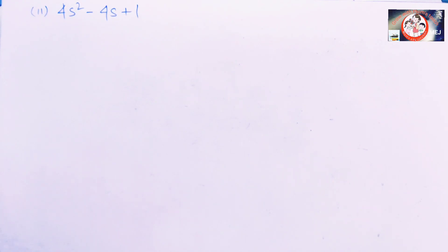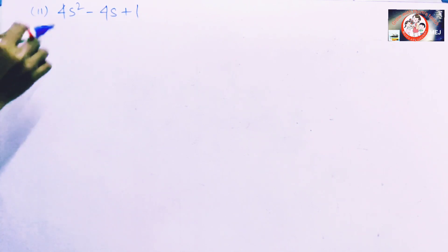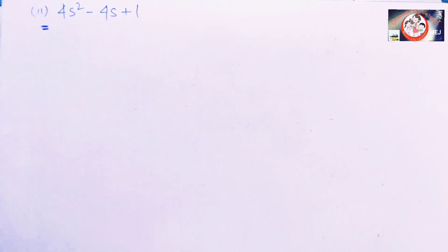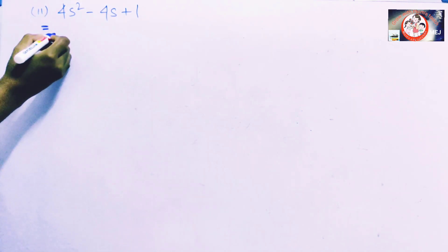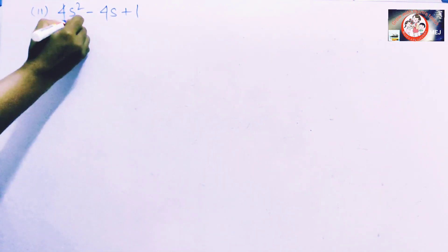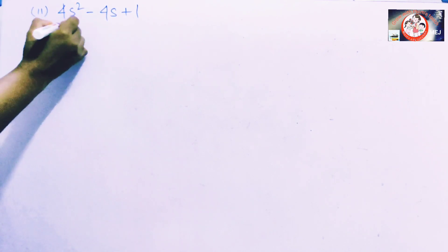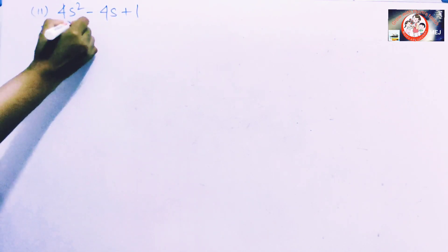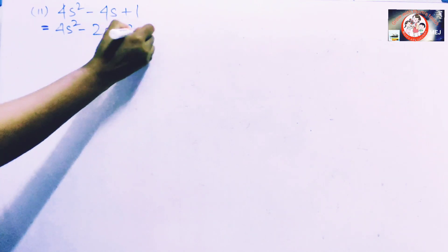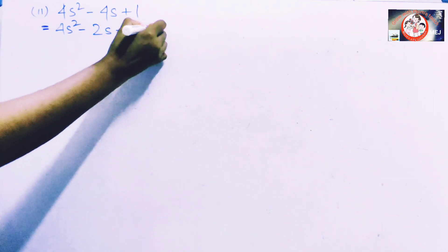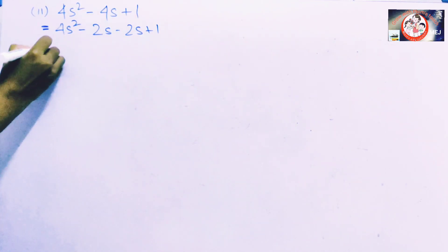Our second question is 4s² minus 4s plus 1. First of all we find the factor of this polynomial with the help of middle term factorization. We can write 4s² minus 2s minus 2s plus 1.